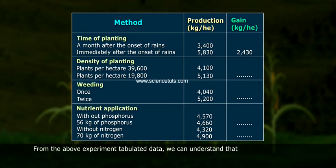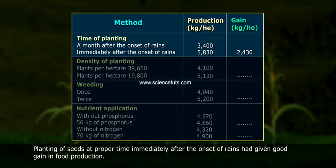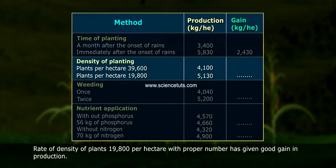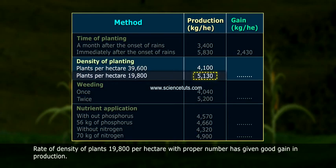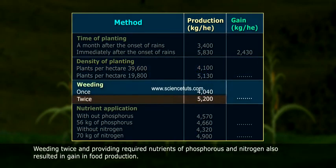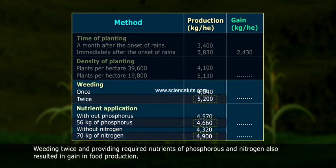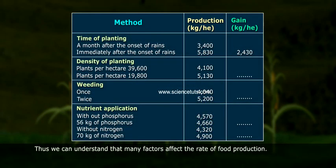From the above experiment tabulated data, we can understand that planting seeds at the proper time — immediately after the onset of rains — gave good grain in food production. A density of 19,800 plants per hectare gave good gain in production. Weeding twice and providing the required nutrients of phosphorus and nitrogen also resulted in a gain in food production. Thus, we can understand that many factors affect the rate of food production.